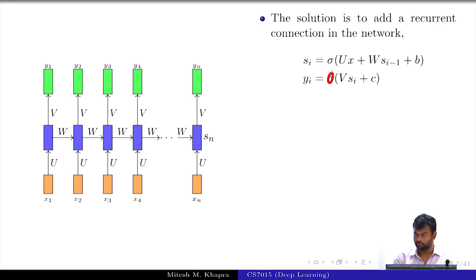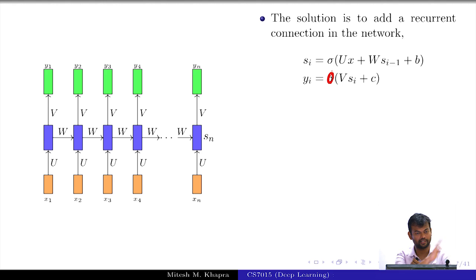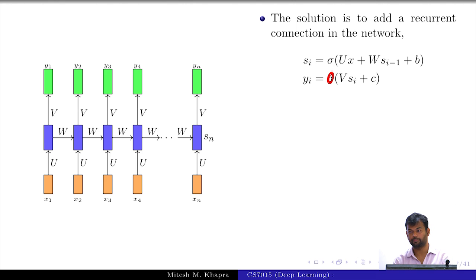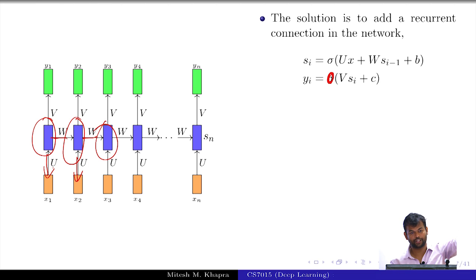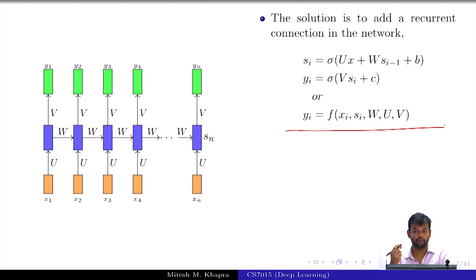How does this solve our problem? Does it take care of everything on the wish list? The way we have written it in terms of i, the same function is definitely getting executed at every time step — there is no doubt about that, modulo the boundary case of S1 where we assume there is an S0. Can it deal with inputs of arbitrary length? Yes, as long as the same function is executed. Does it ensure that the output depends on the previous inputs? Through S(i-1) — this guy depends on the previous input, and on the previous S which in turn depends on the input before that. So recursively you can see that you depend on all the previous inputs. It is a very neat way of ensuring that your output depends on all previous inputs without blowing up the parameters, by sharing this recurrent connection.